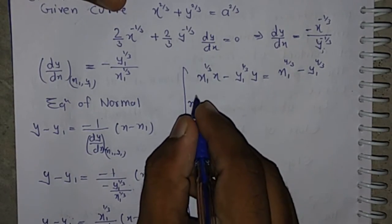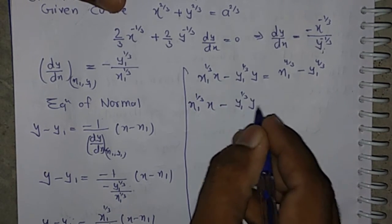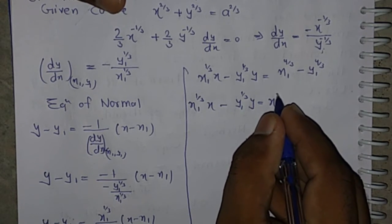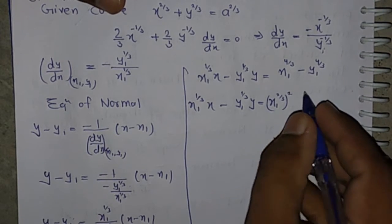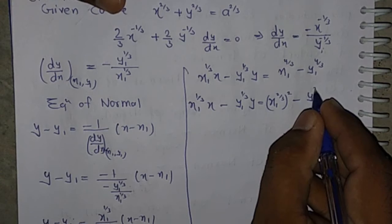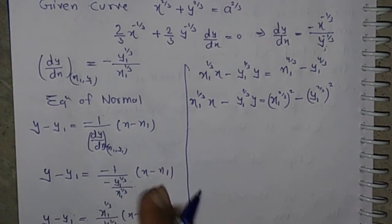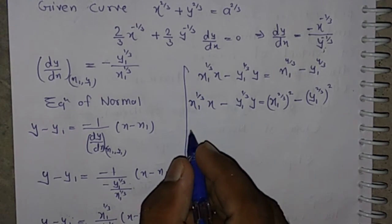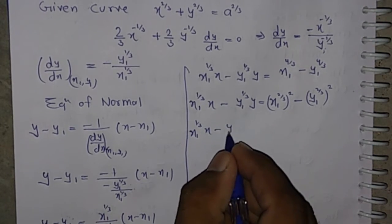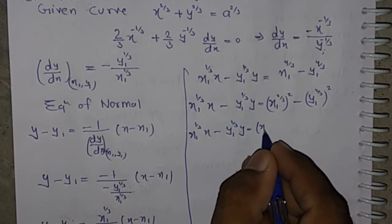Now x1^(1/3)*x - y1^(1/3)*y can be written as x1^(2/3) squared minus y1^(2/3) squared form. Using the formula a^2 - b^2 = (a+b)(a-b), we factor the right-hand side as (x1^(1/3) - y1^(1/3))(x1^(1/3) + y1^(1/3)).